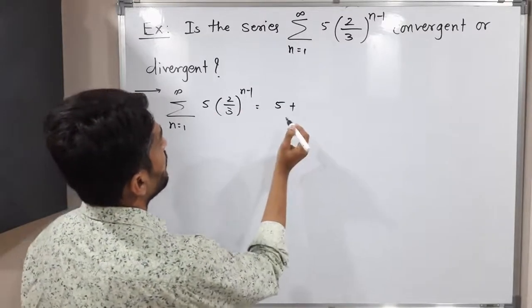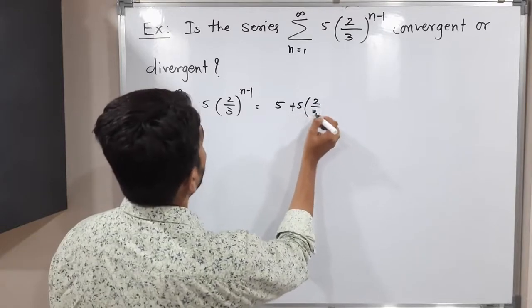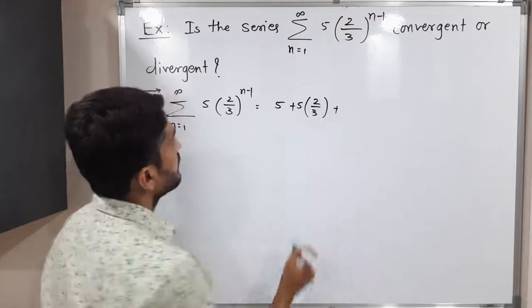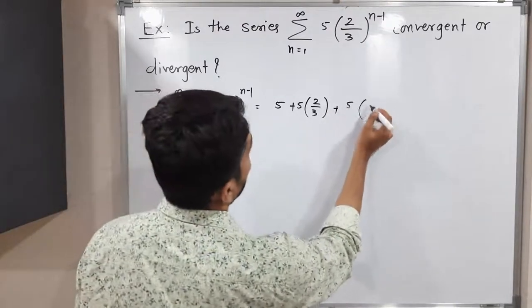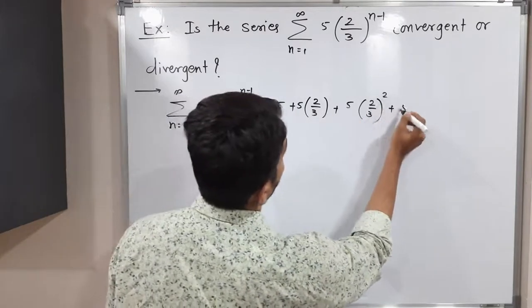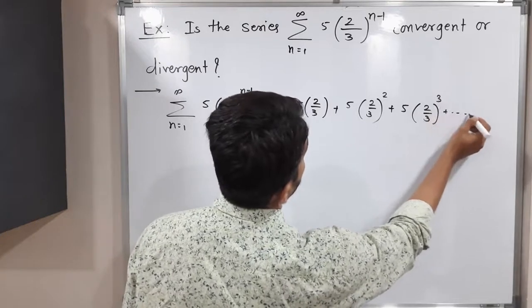If I put n is equal to 2 here, so we'll have 5, 2 by 3 raised to 1. Plus, if I put n is equal to 3, we will have 5, 2 by 3, 3 minus 1, that's 2. Plus 5, 2 by 3 raised to 3, plus and so on. So this is the given series.